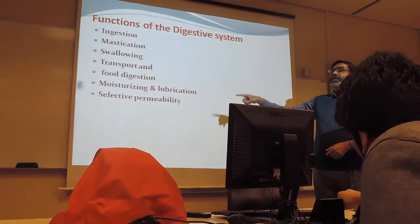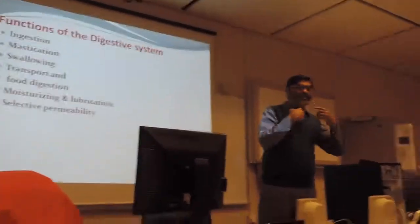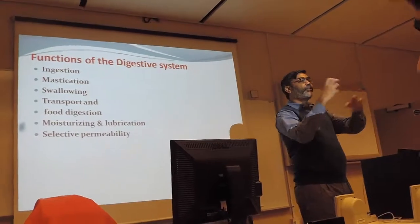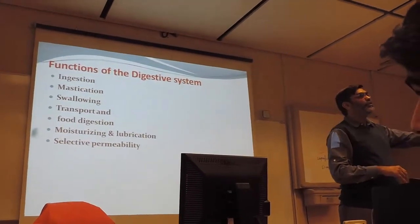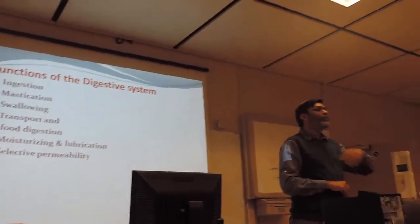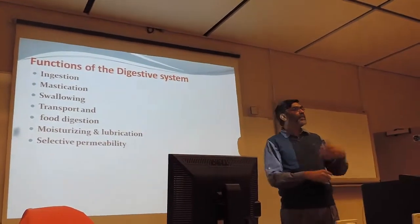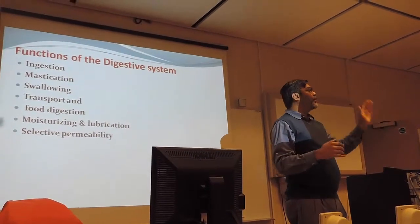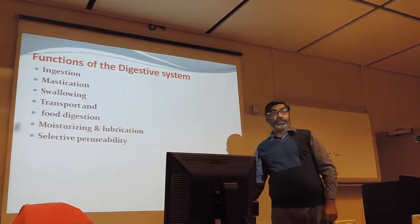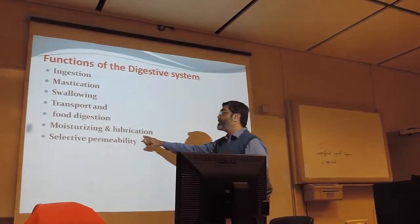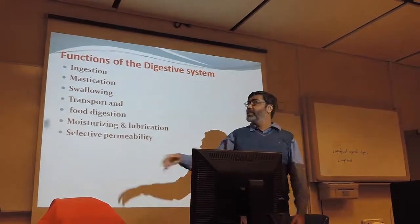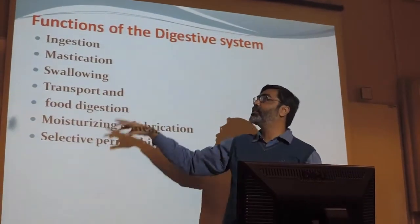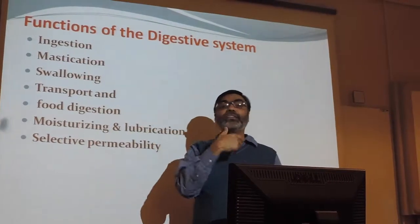Moisturizing and lubrication is the function of the salivary glands. Selective permeability is the function of the intestine, where food is digested and water, proteins, carbohydrates, and amino acids are absorbed. Food material that is not absorbed is excreted out as feces. Starting from the salivary glands, food digestion goes from the stomach till the end; transport is the main function of the esophagus.